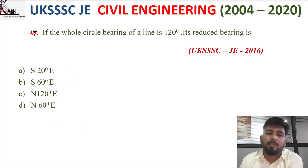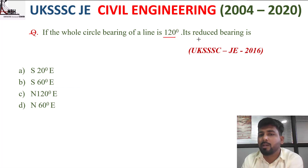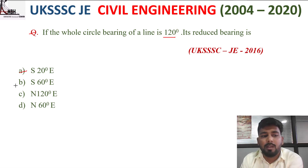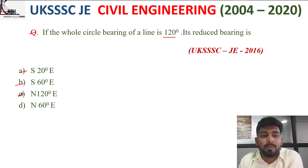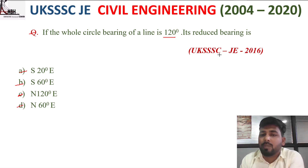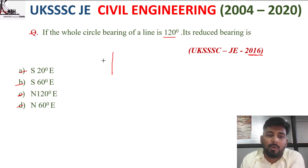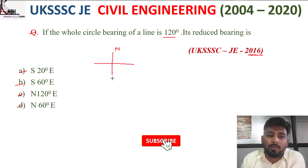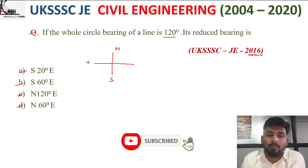Next question: if the whole circuit bearing of a line is 120 degrees, its reduced bearing is — option A South 20° East, B South 60° East, C North 120° East, D North 60° East. In whole circuit bearing, we consider North, South, East, West directions.